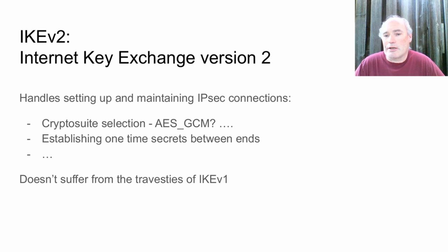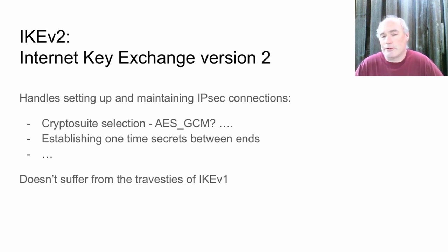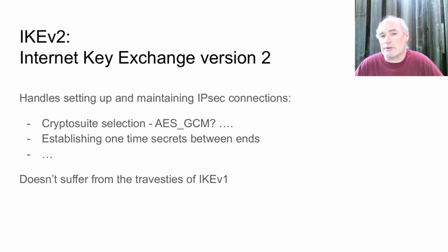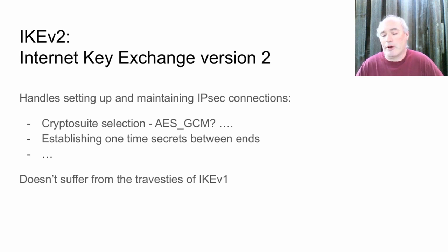Enter the Internet Key Exchange daemon. It deals with all the mess and frustration of establishing two IPsec endpoints. It first establishes its own secure tunnel, and then uses that to establish the IPsec tunnel proper. IKEv2 doesn't suffer from the travesties of IKEv1 — something to keep in mind. If people disparage IKE, they're probably talking about IKEv1.